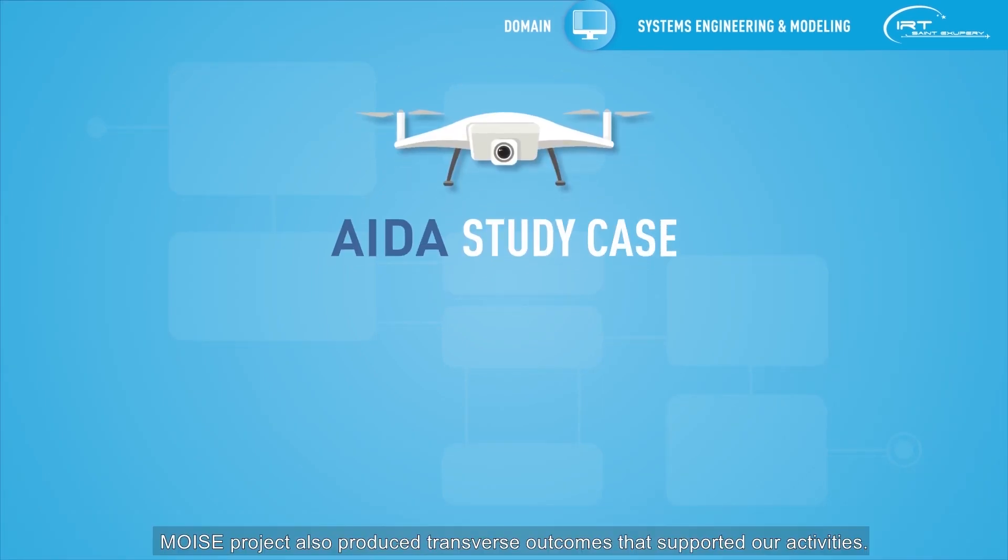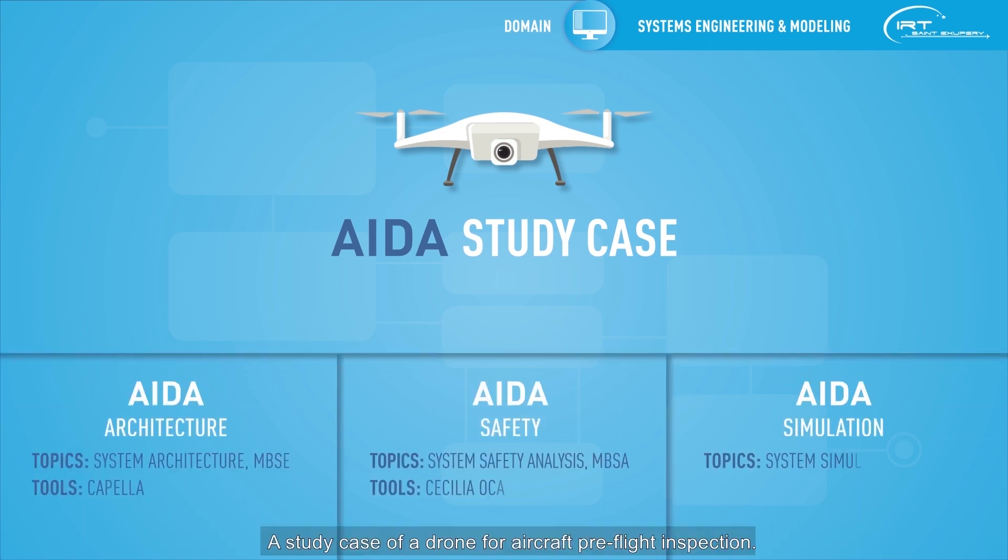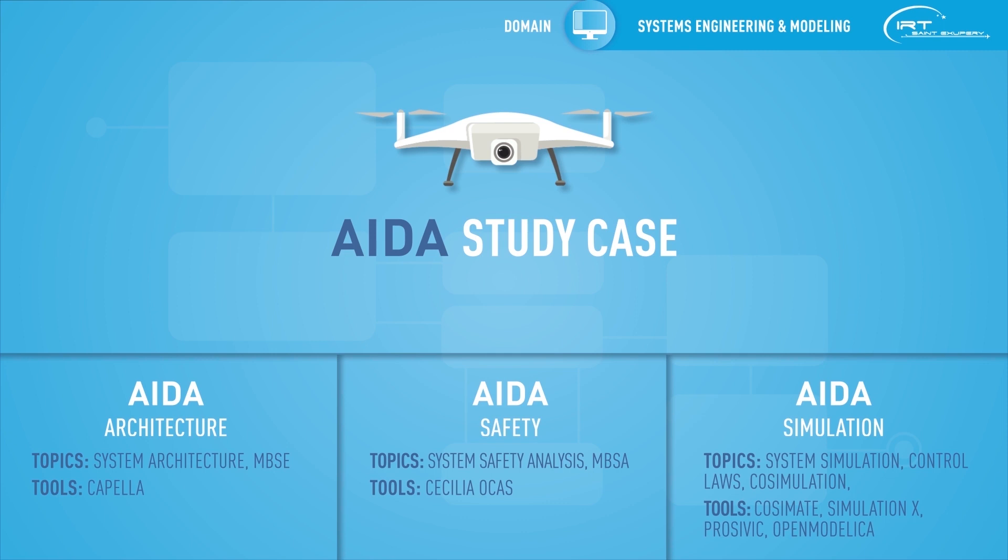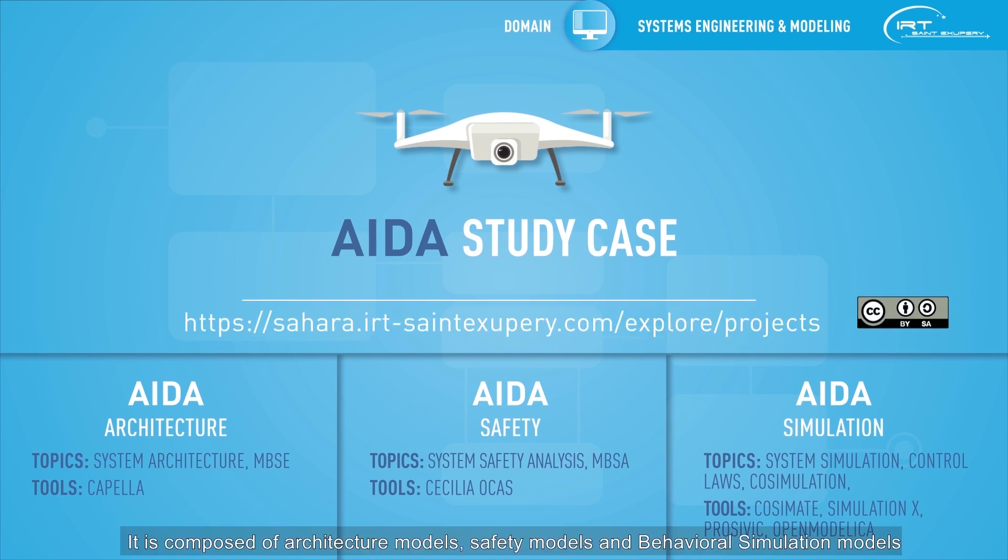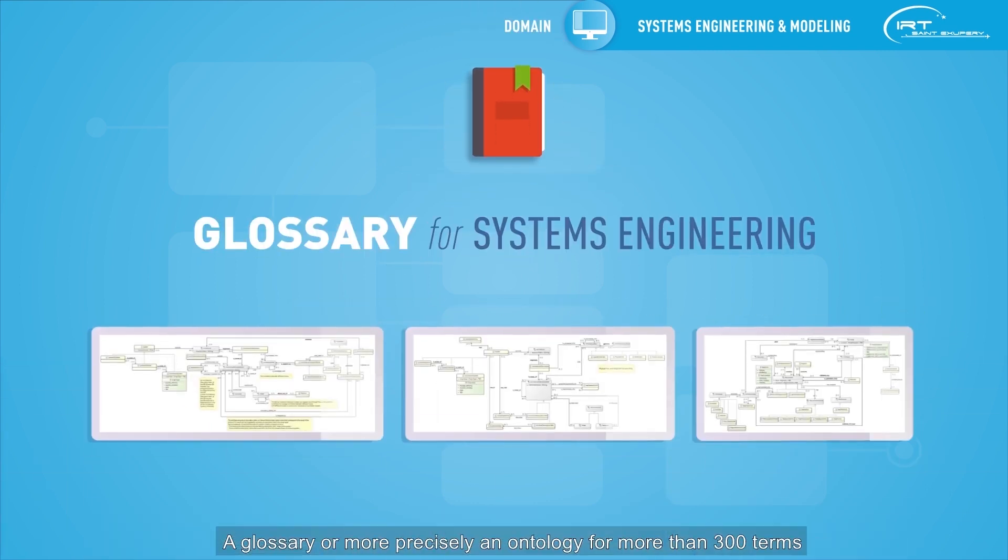MOISE project also produced transverse outcomes that supported our activities. A study case of a drone for aircraft pre-flight inspection. It is composed of architecture models, safety models, and behavioral simulation models, some of which are open source and can be downloaded from the IRT Saint-Exupéry forge. A glossary, or more precisely an ontology, for more than 300 terms relating to system engineering, constituting a valuable common reference.